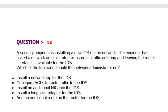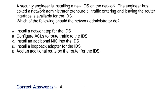Question: A security engineer is installing a new IDS on the network. The engineer has asked a network administrator to ensure all traffic entering and leaving the router interface is available for the IDS. Which of the following should the network administrator do? Option A, install a network tap for the IDS. Option B, configure ACLs to route traffic to the IDS. Option C, install an additional NIC into the IDS. Option D, install a loopback adapter for the IDS. Option E, add an additional route on the router for the IDS. Correct answer is Option A.